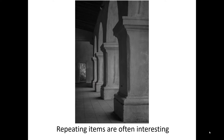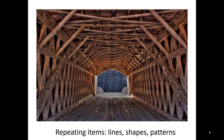Repeating items in a photograph are also often interesting and a good thing to use in composition. Here, there's a column in the front and three other columns behind it, all forming a nice repeating line. This is the inside of a covered bridge showing how the wooden structure is put together, with many repeating lines, shapes, and patterns.